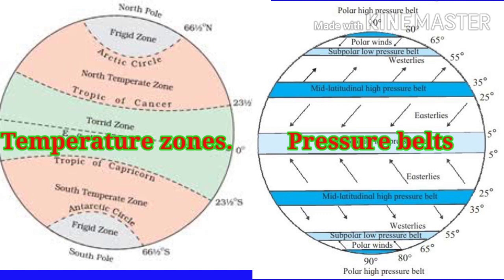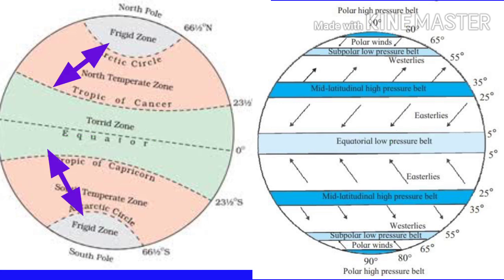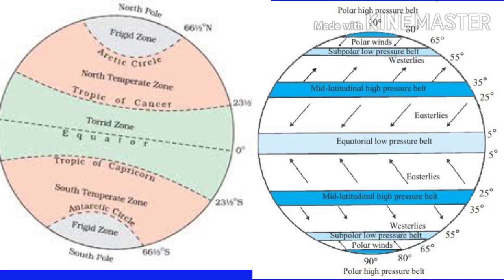Temperature zones and pressure belts are interrelated. However, the latitudinal extent of temperature zones is much larger while pressure belts are narrower. For example, the temperate zone extends from 23°30' to 66°30', while the air pressure belt has a limited extent, generally up to 10° parallel. The uneven distribution of temperature influences the distribution of air pressure, leading to the formation of low and high pressure belts horizontally between the equator and the poles. Observe diagrams 4.2a and 4.2b carefully and answer the following questions.